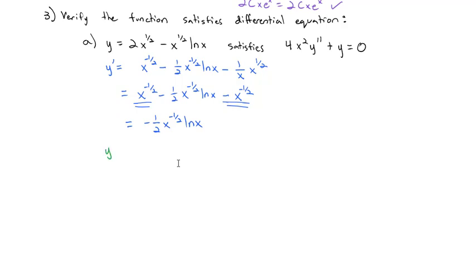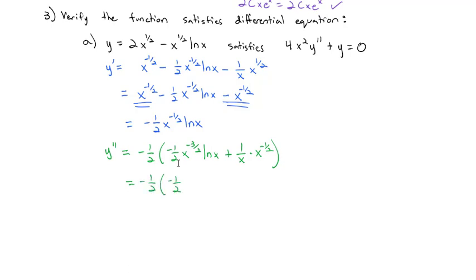Our differential equation uses the second derivative, so we also find y''. With -1/2 out front, applying the product rule: x^(-1/2) becomes -1/2·x^(-3/2), times ln(x), plus (1/x)·x^(-1/2). After cleanup, y'' = (-1/2)·[(-1/2)x^(-3/2)·ln(x) + x^(-3/2)].